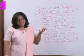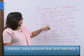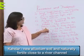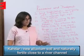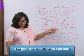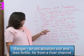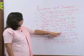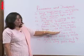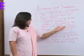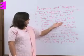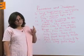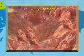Khadar and Bangar are two kinds of alluvial soils. Khadar is new alluvium soil — young, naturally very fertile, and generally close to a river channel. Bangar is old alluvium soil — less fertile and farther away from the river channel. The key difference: Khadar is new and fertile, close to the river; Bangar is old and less fertile, away from the river.